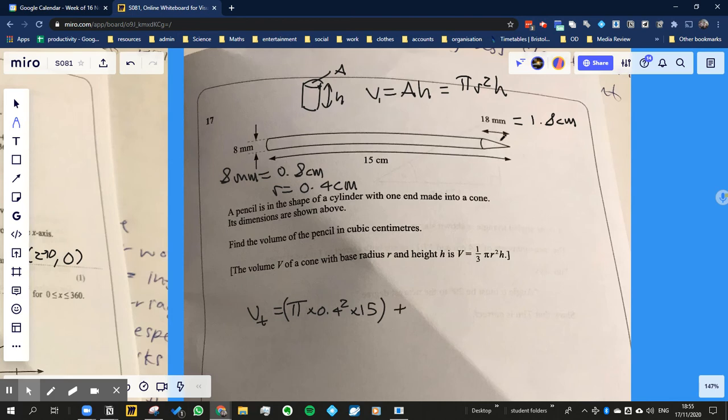It has the same radius, so the cone is one third times π times 0.4² times the new height which is 1.8 centimeters. So basically if you put all that together you should get the volume of the pencil.